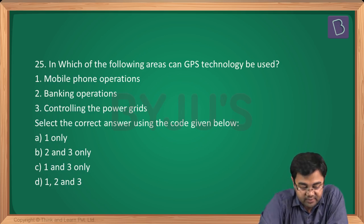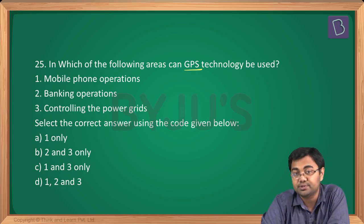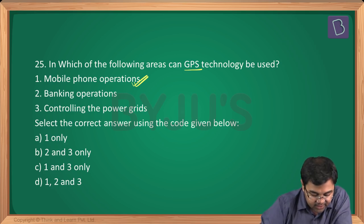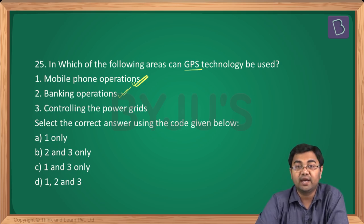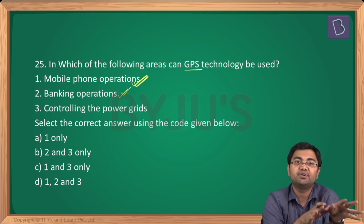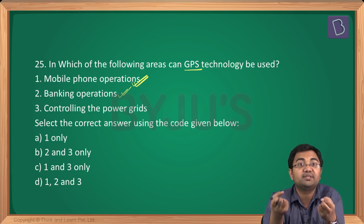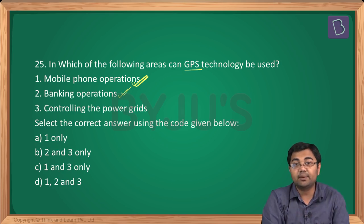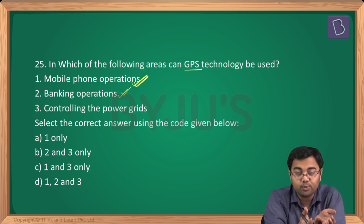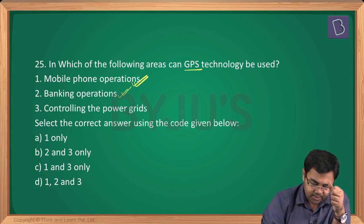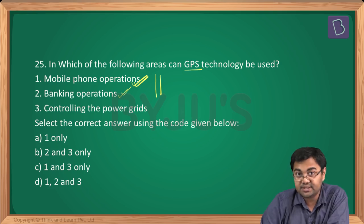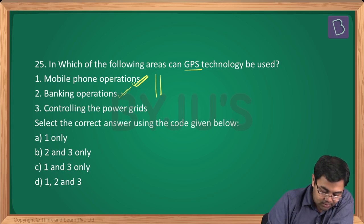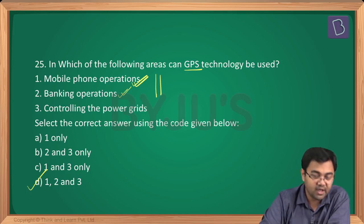Question number 25: in which areas can GPS technology be used? Mobile phone operations — definitely correct, you use it widely. Banking operations — yes, GPS can provide exact location or coordinates of where a transaction is happening, providing location-based services to mobile users. So statements 1 and 2 are definitely correct. Since there is no option saying '1 and 2 only,' the correct option must be 1, 2 and 3.